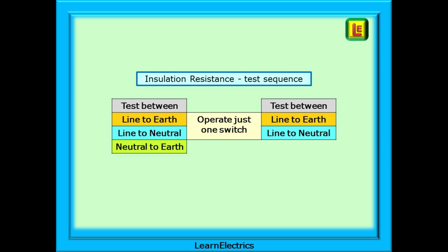And here is a quick reminder of the insulation resistance test sequence. Line to earth and line to neutral should be tested twice. Neutral to earth only needs one test.